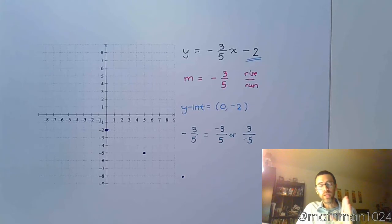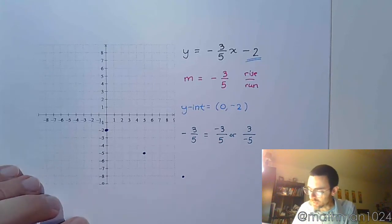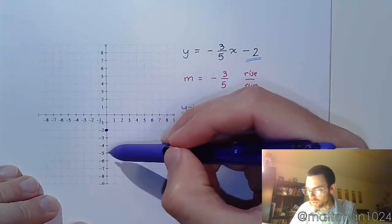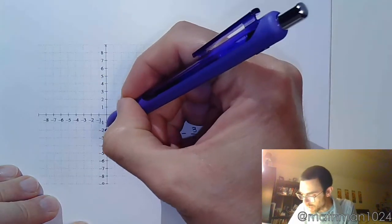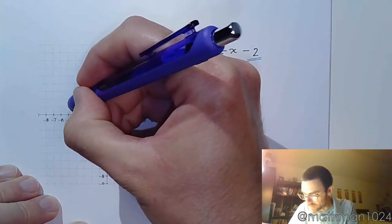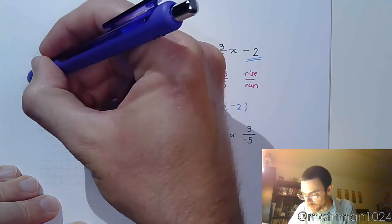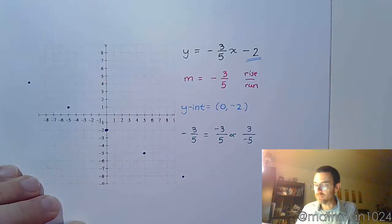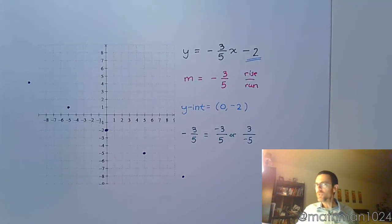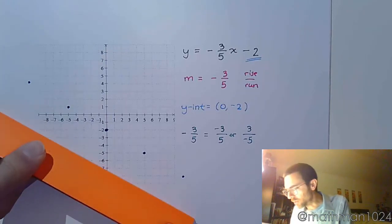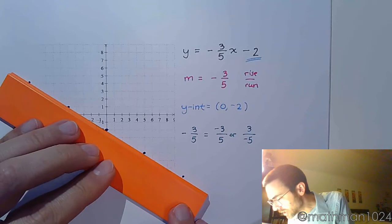Get more points so we can get stuff on the left side of the graph. Instead of going down 3 into the right 5, go up 3 into the left 5. Up 1, 2, 3 into the left 1, 2, 3, 4, 5. As long as we were counting correctly and spacing these out the right way, we should be able to put our straight edge up there and it's going to go through all these points without a problem.